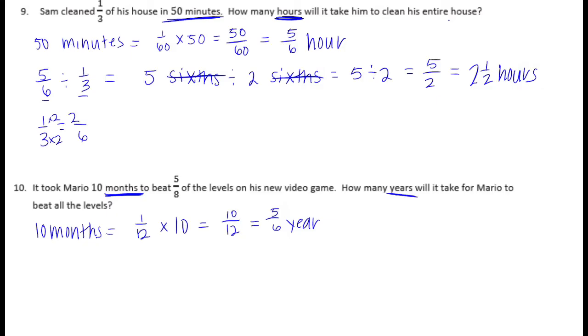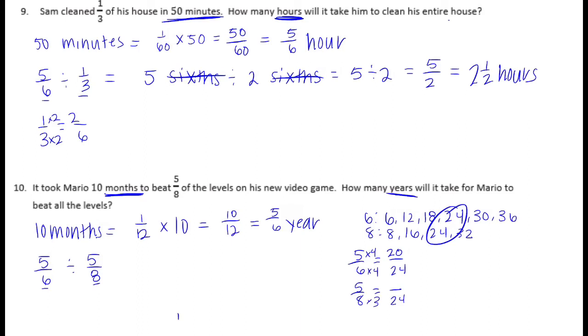So now we're going to take the 5 sixths of a year and divide it equally among 5 eighths levels. Now in order to do this, I need to find a common denominator for 6 and 8. So 6, 12, 18, 24, 30, 36. Let's see if we can find one to match. And there it is, 24. So I need to make 5 sixths into 24ths. 6 times 4 is 24, 5 times 4 is 20. And 5 eighths into 24ths. 8 times 3 is 24, 5 times 3 is 15.